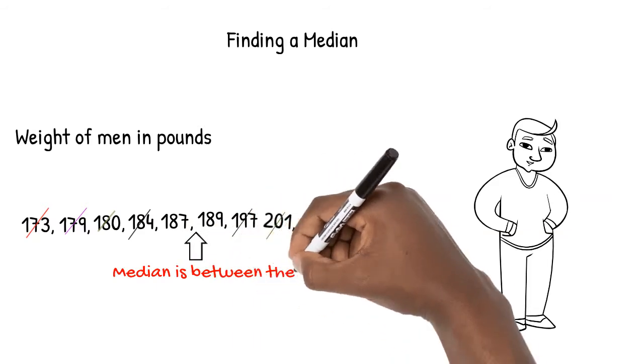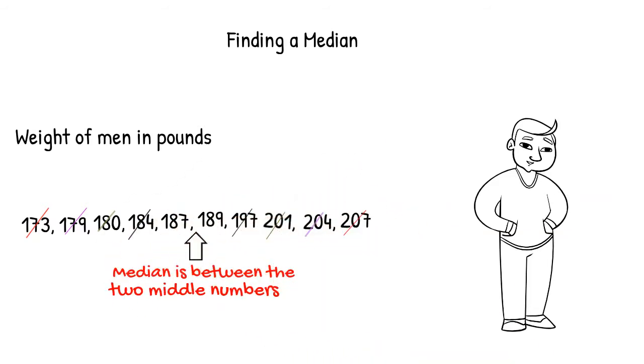The median is in the middle of these two numbers. To find one number in the center of these numbers, we average them by adding them and dividing by two. The median in this example is 188 pounds.